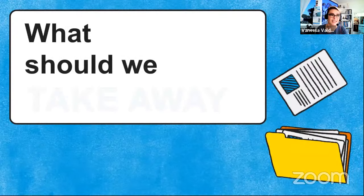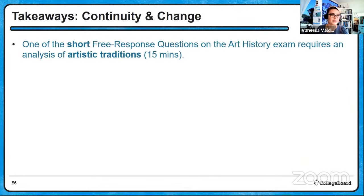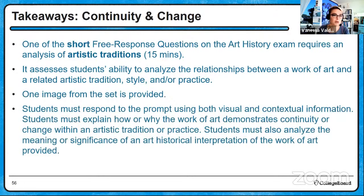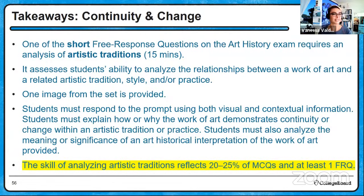So what should we take away? One of the short free response questions requires an analysis of artistic traditions — this is called Continuity and Change, it is FRQ 6. It assesses students' ability to analyze the relationships between a work of art and a related artistic tradition, style, and/or practice. One image from the set is provided. Students must respond using both visual and contextual evidence, demonstrate how or why the work demonstrates continuity or change, and analyze the meaning or significance of an art historical interpretation of the work provided. The skill of analyzing artistic traditions reflects 20 to 25 percent of the test and at least one FRQ.